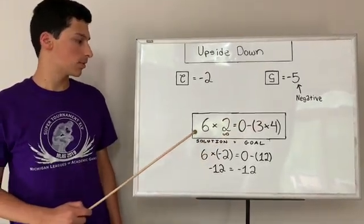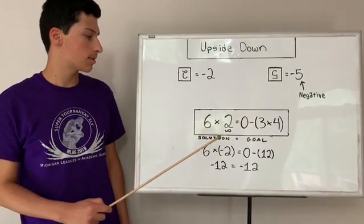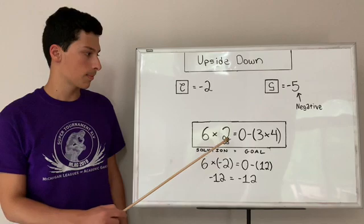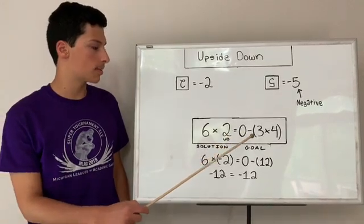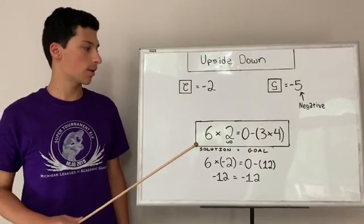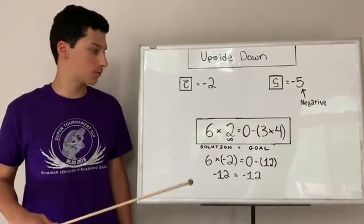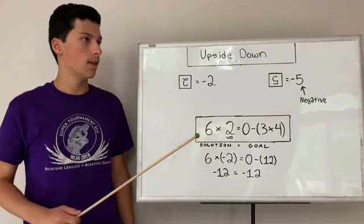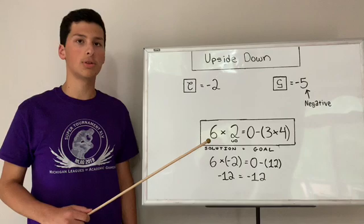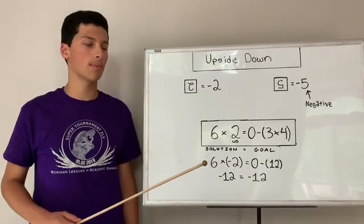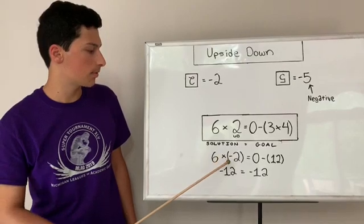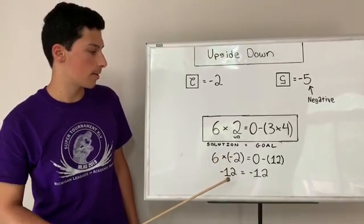If you look at this solution here, the person did 6 times 2 upside down, they indicated with the ud under the 2, which equals 0 minus 3 times 4. This solution is very practical because on such a goal that goes into the negative numbers, like negative 12, which is the value of the goal, the person only did a 3 cube solution for that goal. Whereas, if you didn't use upside down, it would take many more cubes to reach this goal. So, as you can see, 6 times negative 2 is negative 12, and that equals negative 12.